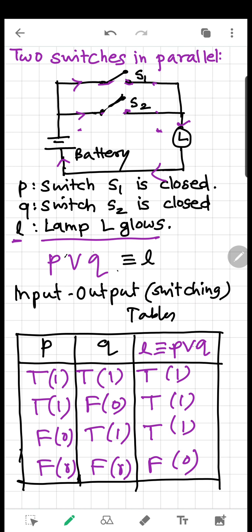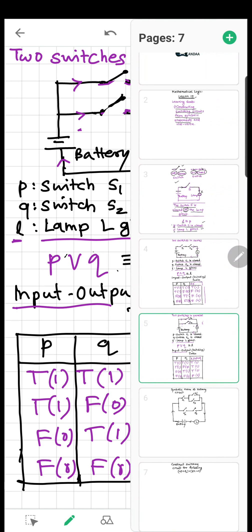With practice you can directly write in 0 and 1 instead of true and false. When an input-output table is asked, you write it using 1 and 0. Now we have AND operation and OR operation represented by switches. For the NOT operation, we introduce another switch: if S1 is closed (meaning P is true), then NOT P is represented by a switch called S1-prime. The combination is: when S1 is closed, S1-prime must be open, and when S1 is open, S1-prime must be closed. We can see this in the examples.